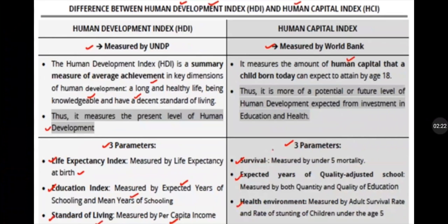Who releases the HDI? It is released by the UNDP — United Nations Development Programme. And HCI, the Human Capital Index, is released by the World Bank. Both are index reports with 3 parameters each.